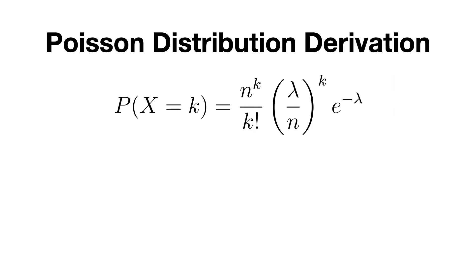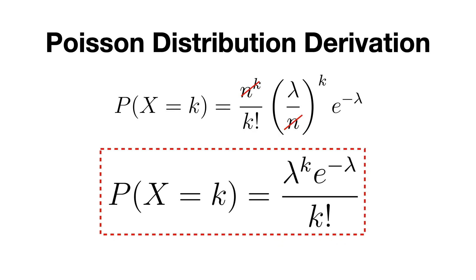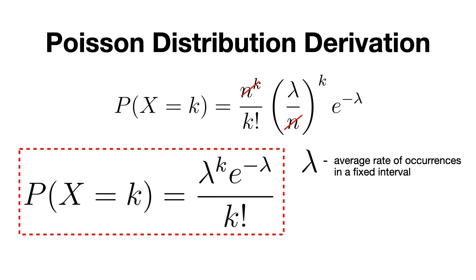Finally, let's substitute everything into the binomial formula and if we simplify it by removing this term here, voila, we have the Poisson formula distribution where, again, lambda is the average rate of occurrences in a fixed interval and k is the number of successes you want to calculate the probability for.